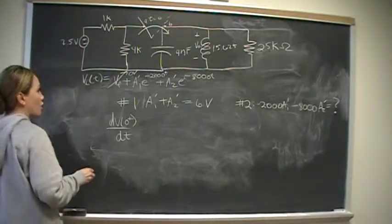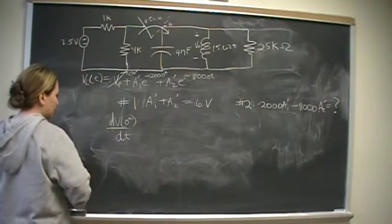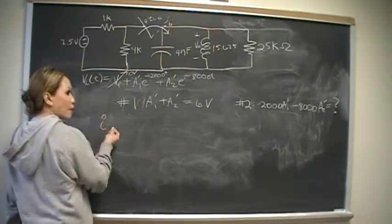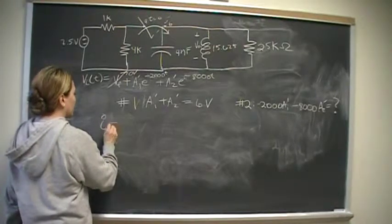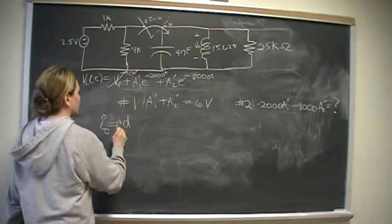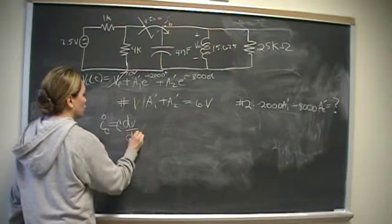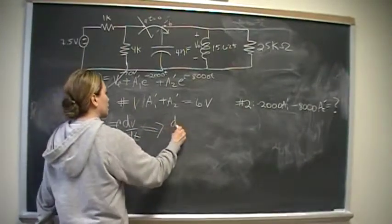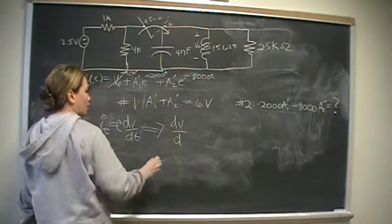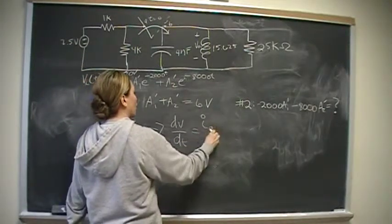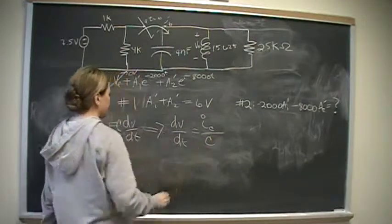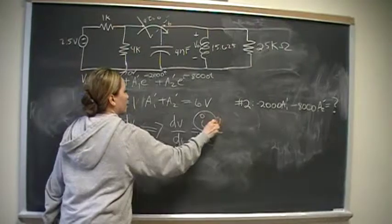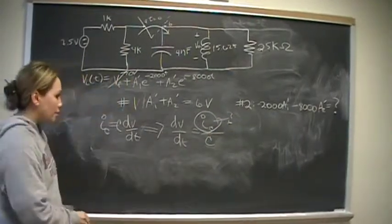Well, recall that dv/dt is the capacitor current. Remember that the current across the capacitor is equal to C, the capacitance, times the derivative of the voltage. So therefore, dv/dt, which we need for our equation, is going to be the current across the capacitor divided by the capacitance. We know the capacitance. What we need to find out is what is I sub C. So what is I sub C?